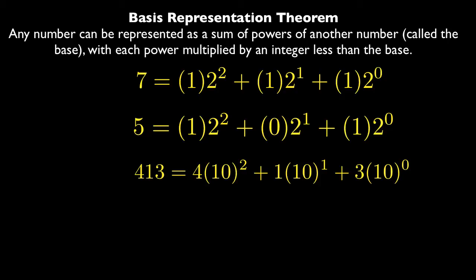And then I added those 1 times there to show how many of each we're doing. So 5 is equal to 1 times 2 squared plus 0 times 2 to the 1st plus 1 times 2 to the 0 power. And 413 is 4 times 10 squared plus 1 times 10 to the 1st plus 3 times 10 to the 0th power. This should be fairly clear. If not, think about 413 is equal to 4 hundreds plus 1 ten plus 3 ones.